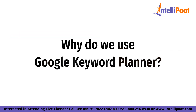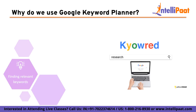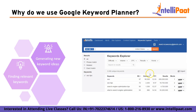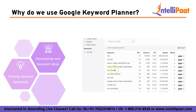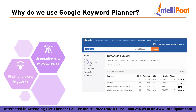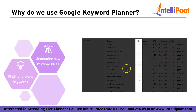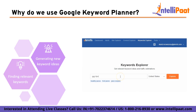So why exactly do we need to use Google Keyword Planner? We use Google Keyword Planner for several reasons, such as finding relevant keywords. Keyword Planner helps us to find relevant keywords for our website or business. It allows us to search for specific keywords related to our business and see how frequently those keywords are searched by users. Second is to generate new keyword ideas. With Keyword Planner, we can get suggestions for new keywords that we may not have thought of before, helping us expand our keyword list and target more relevant search queries.